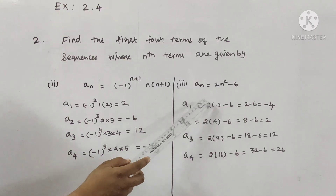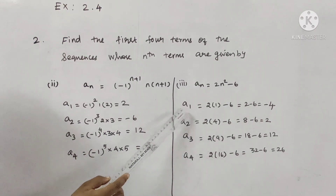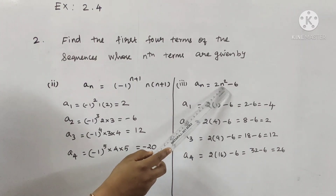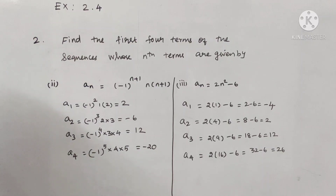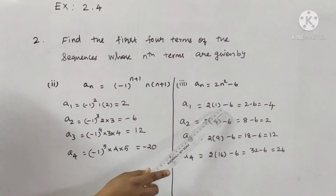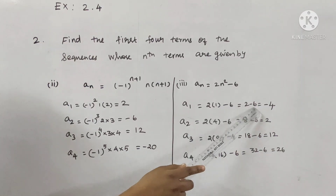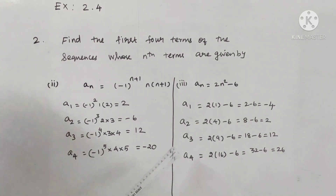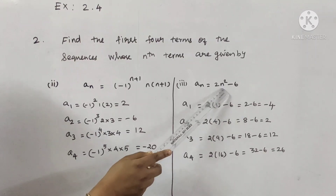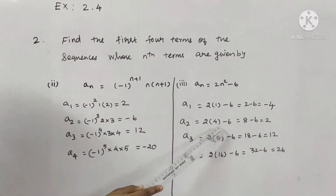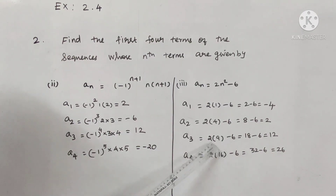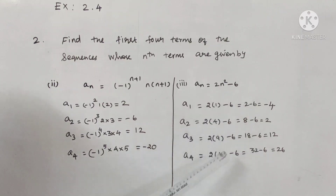Next is the third substitution. aₙ is equal to 2n² minus 6. So a1: 2 into 1 squared is 2 into 1 is 2, minus 6 is minus 4. Next a2: 2 into 2 squared is 2 into 4 is 8, minus 6 is 2. Next a3: 2 into 3 squared is 2 into 9 is 18, minus 6 is 12. Next a4: 2 into 4 squared is 2 into 16 is 32, minus 6 is 26.